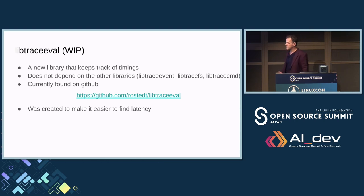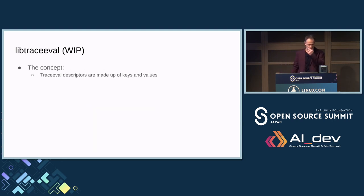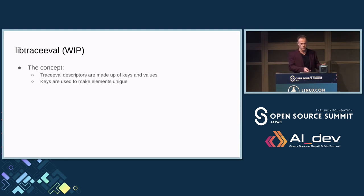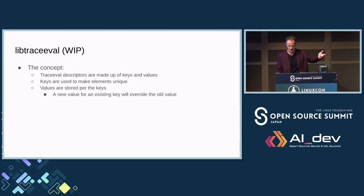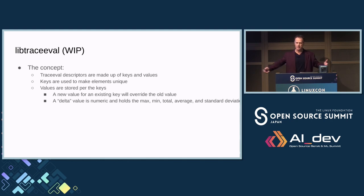Libtraceeval was an easier way to analyze latency, based on the histogram logic inside the Linux kernel. The concept: it has a descriptor based on keys and values. Keys are what make an item unique — like a process ID — and you attach values to keys. Values are stored per key. If a key already exists and you add a new value, it overwrites the old one. There's a special delta value that keeps track of max, min, standard deviation, total, and count — a running number automatically kept with the key.